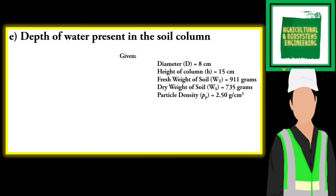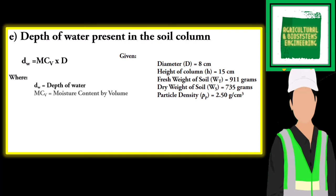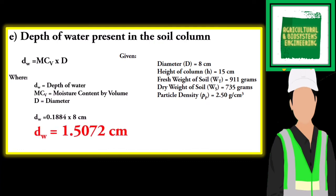Finally, let us solve for the depth of water present in the soil column. We will be using this formula and substituting the values. The final answer for our depth of water is 1.5072 centimeters.